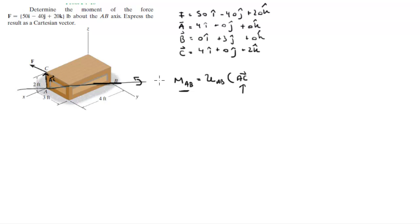So now we need to find a unit vector in the A and B direction, that is given by the vector AB divided by its own magnitude. Vector AB can be found by doing vector B minus vector A, and it comes out to be minus 4 in the i plus 3 in the j plus 0 in the k.